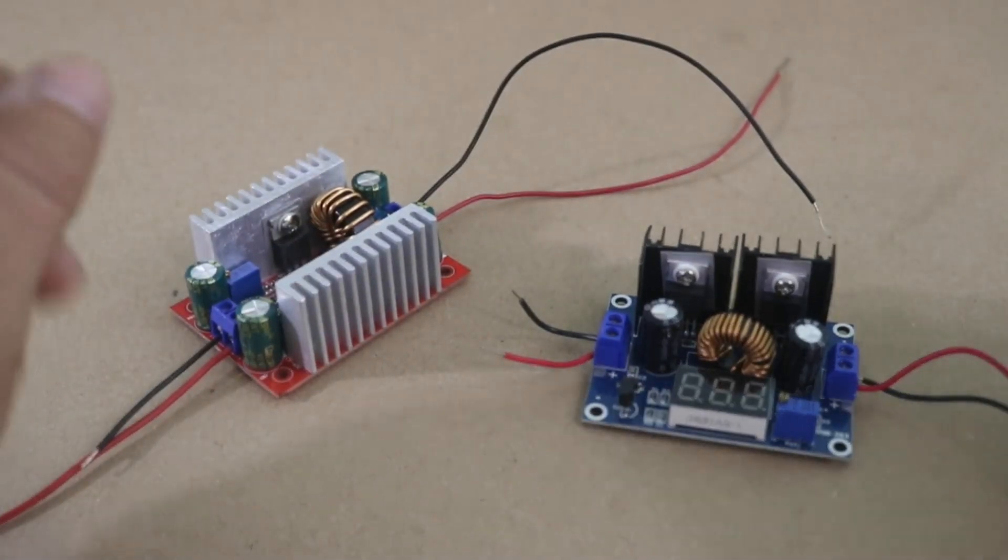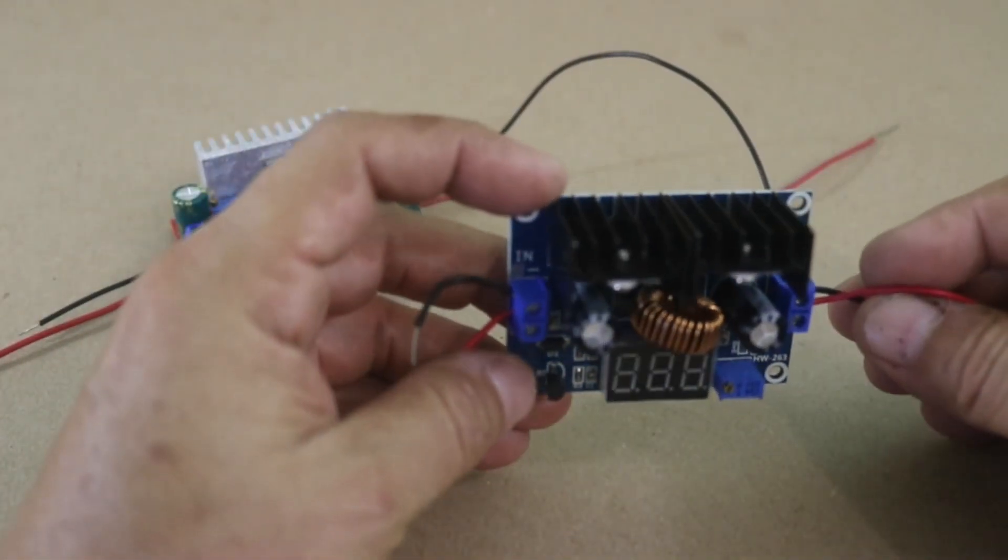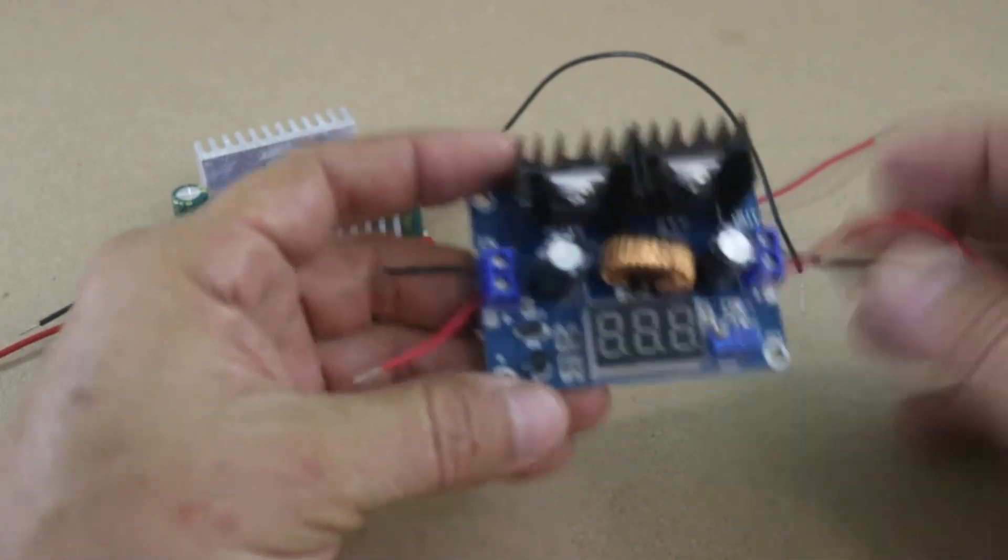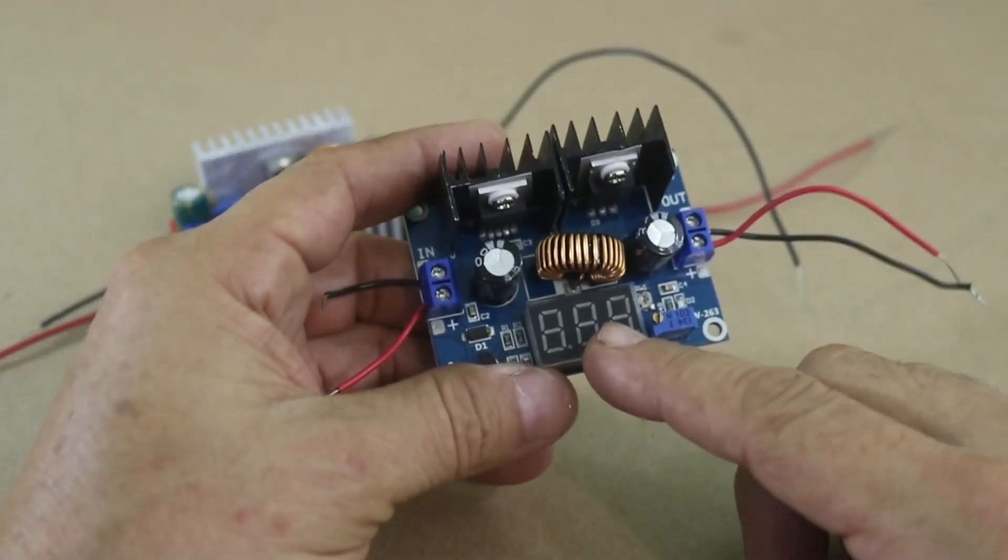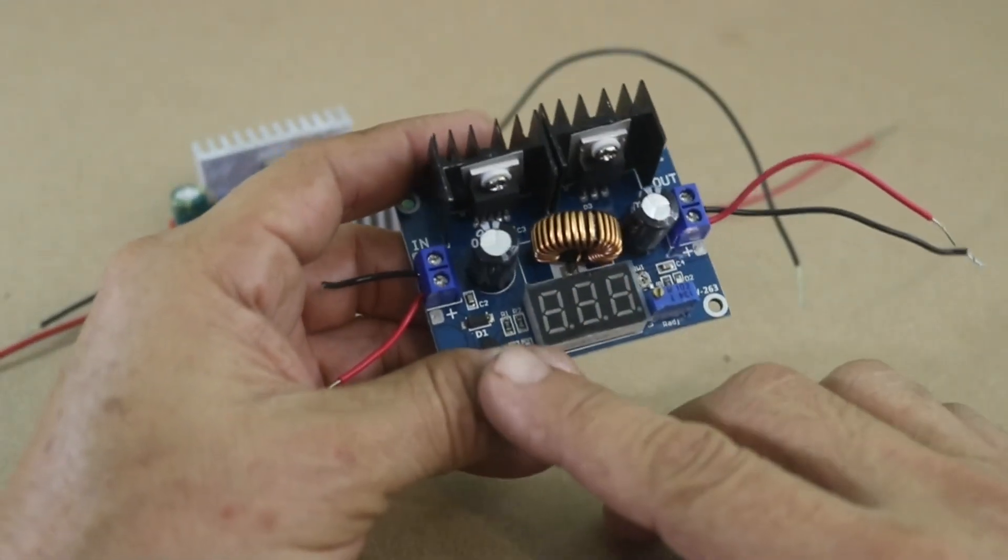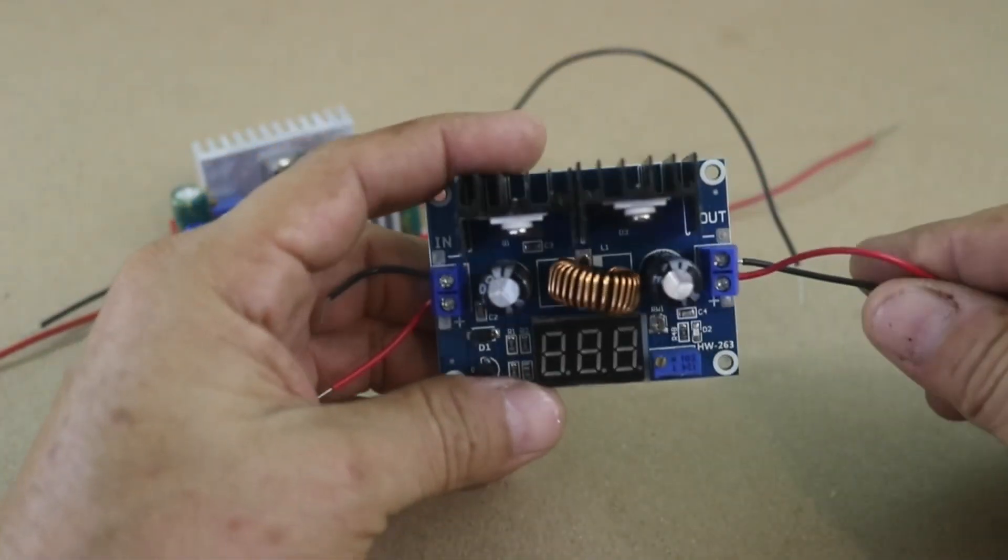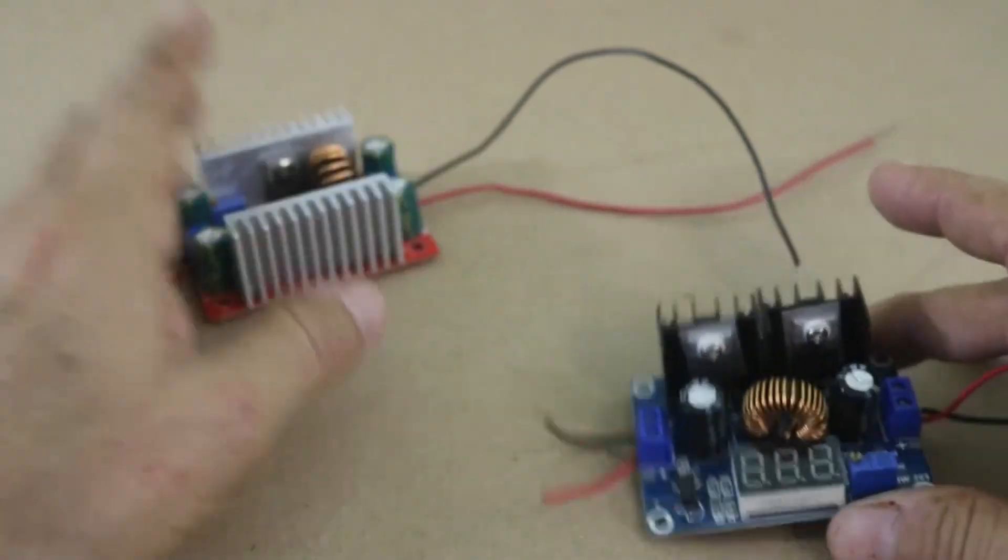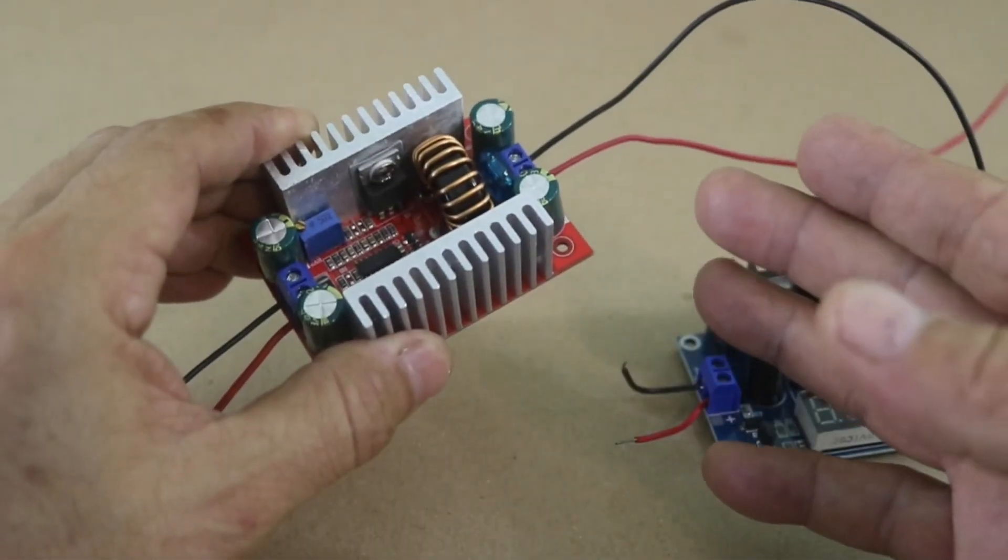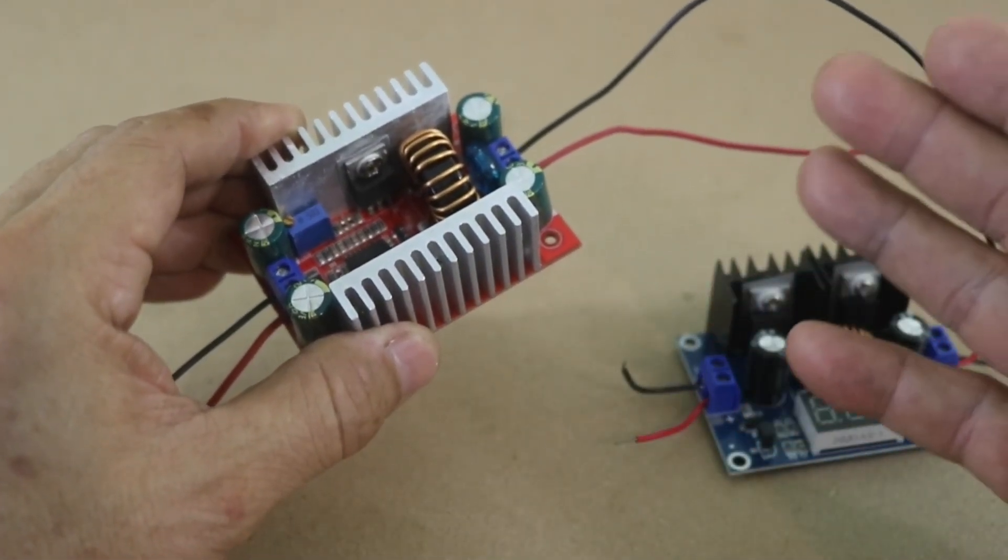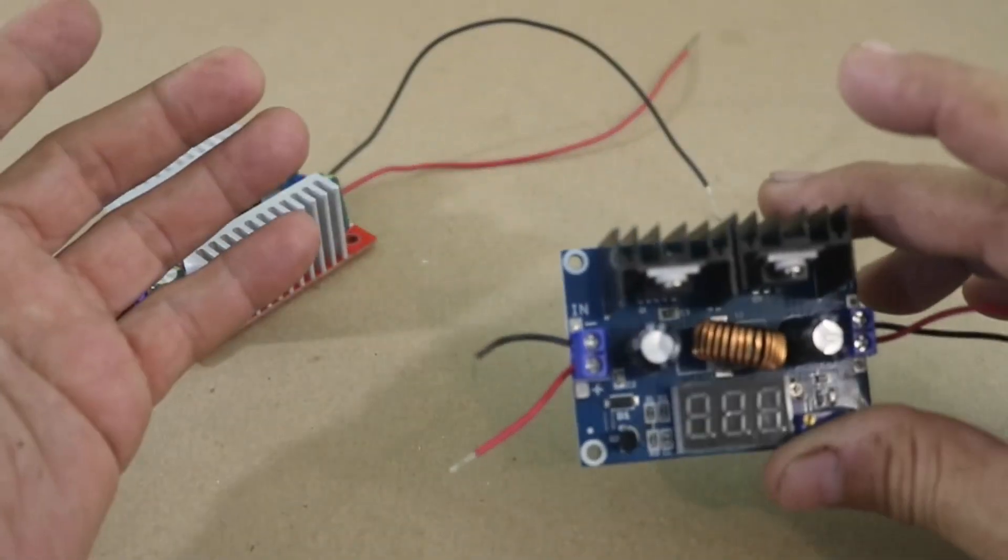They are very handy because you can vary the voltage of a fixed voltage source. This one for example you can take a 12 volt battery, connect the module and then you can vary the voltage of the battery from 1.25 volts which is the minimum output up to the 12 volts of your battery and this other is an elevator. You connect the same 12 volt battery and you can obtain up to 60 volts and they are relatively cheap and they work very well.